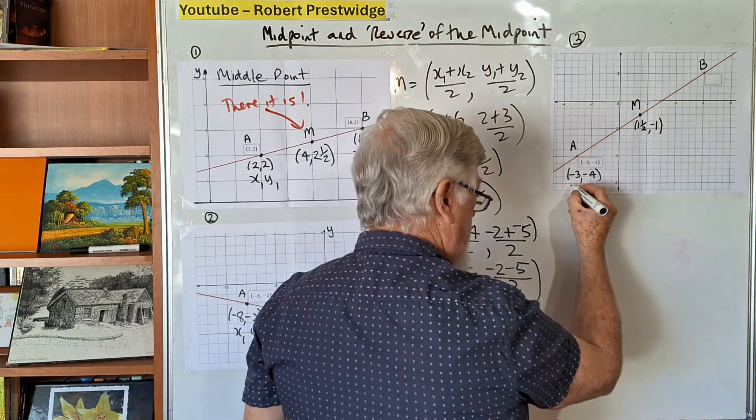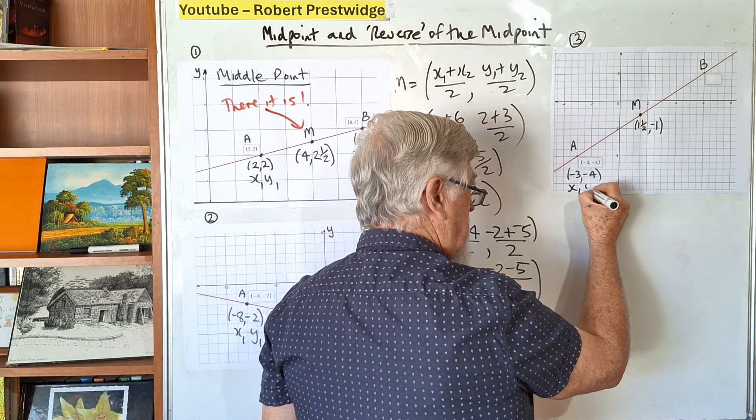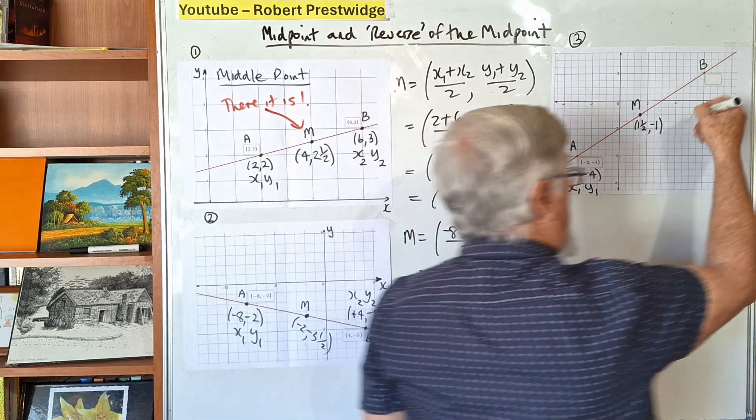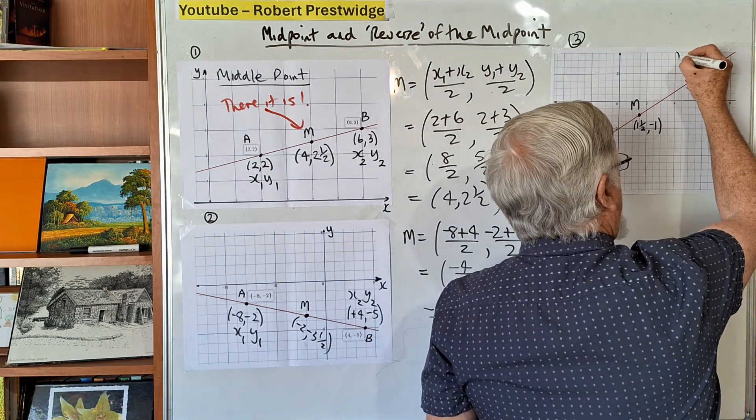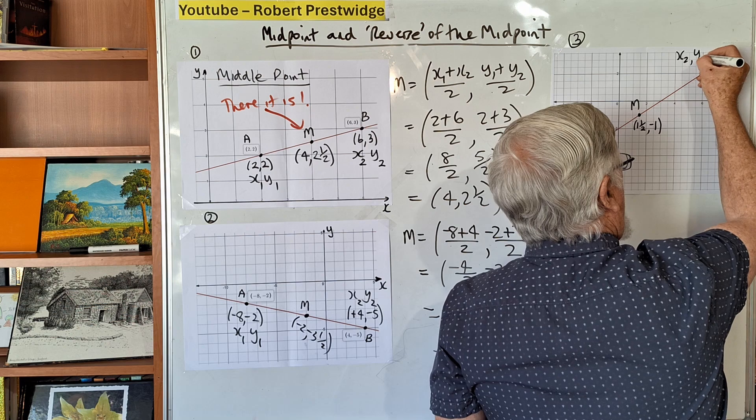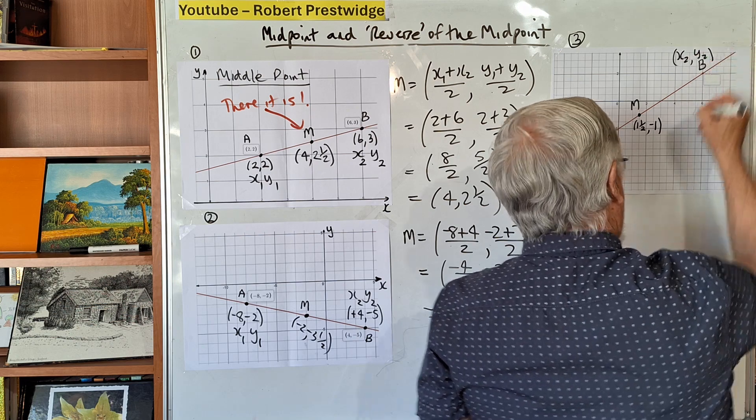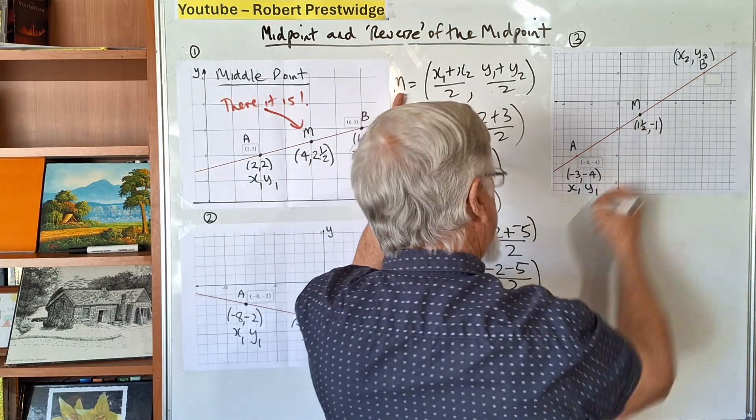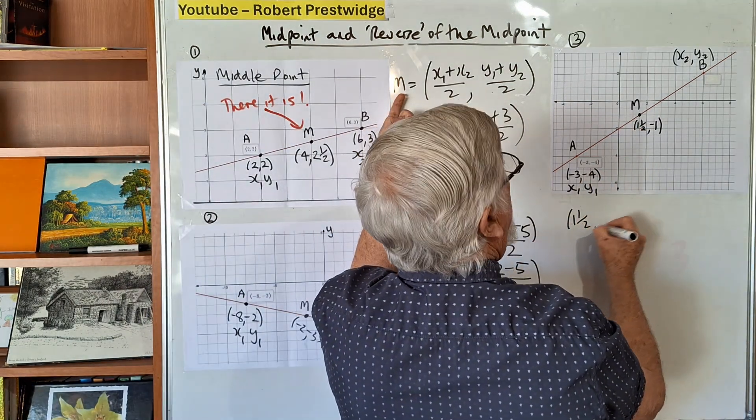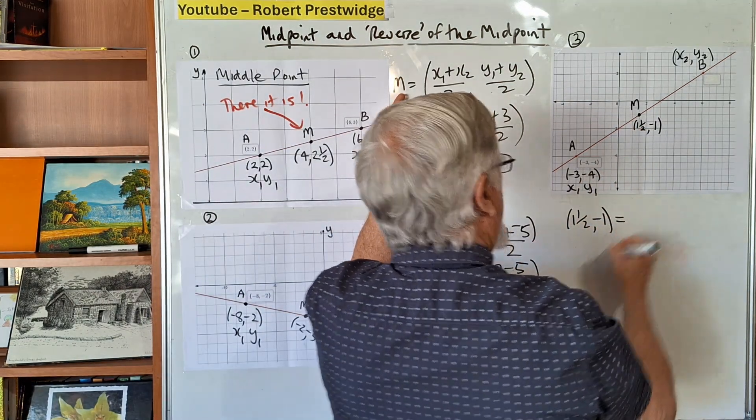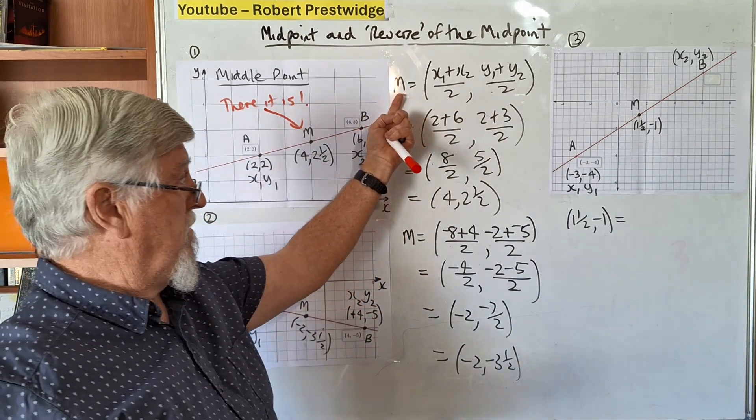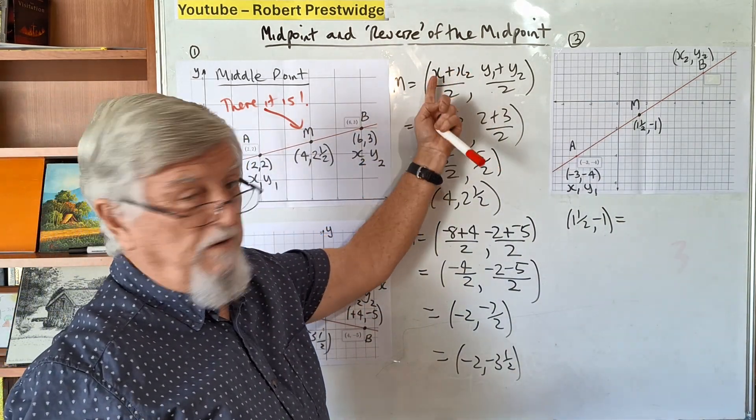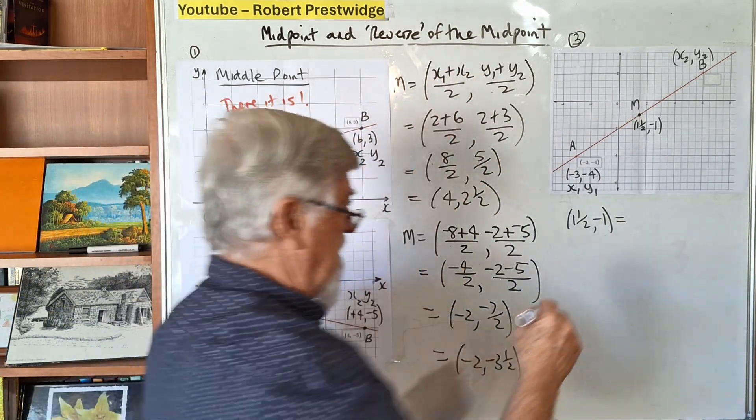We know it's the midpoint formula. We've got the formula up there. I have a midpoint here M. There's x₁ and y₁, and we want to find x₂ and y₂. The middle point is 1.5 and -1.